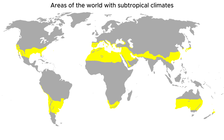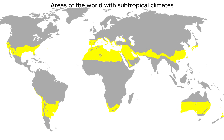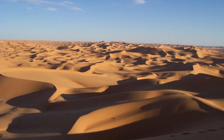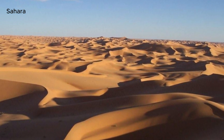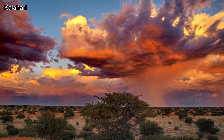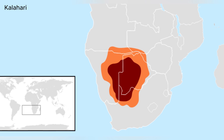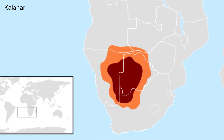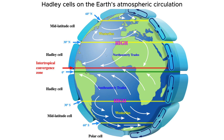The most widespread deserts on Earth are the subtropical deserts. These deserts, like the Sahara, Arabian, and Kalahari, are located around 20 to 30 degrees north and south of the equator in regions with intense sunlight and dry, stable atmospheric conditions.